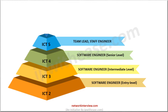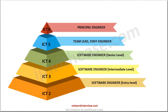The final senior-level position in Apple is ICT6, which is considered equal to the principal engineer of other companies. This band level acts as a bridge between the technical staff and the management or marketing staff. The average annual salary of an ICT6 or software engineer 6 is $754,000.